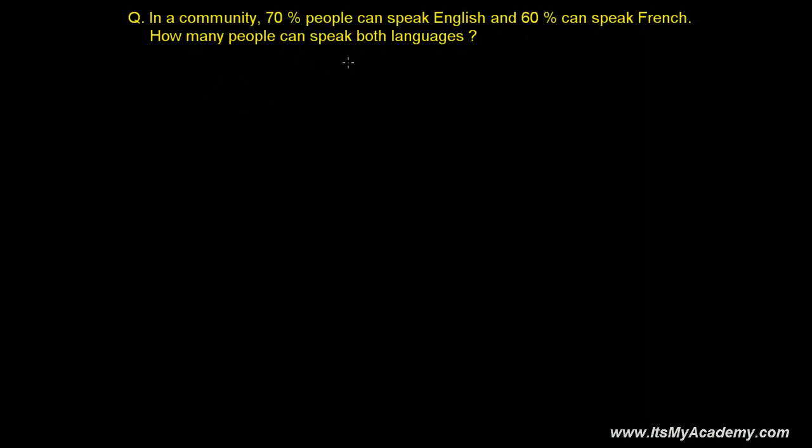So in a community, if we have 100% people, definitely in a community that are only to consider, that's 100% people. And out of those 100% people, 70% of that population can speak English and 60% of that community can speak French. The question is asking us, we need to find out how much percent or how many people can speak English as well as French. Both they can speak.